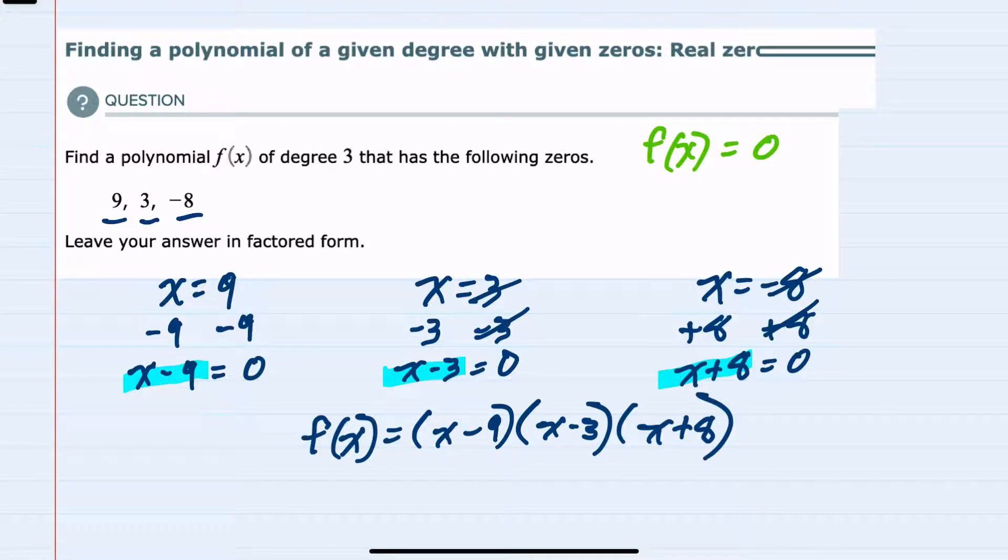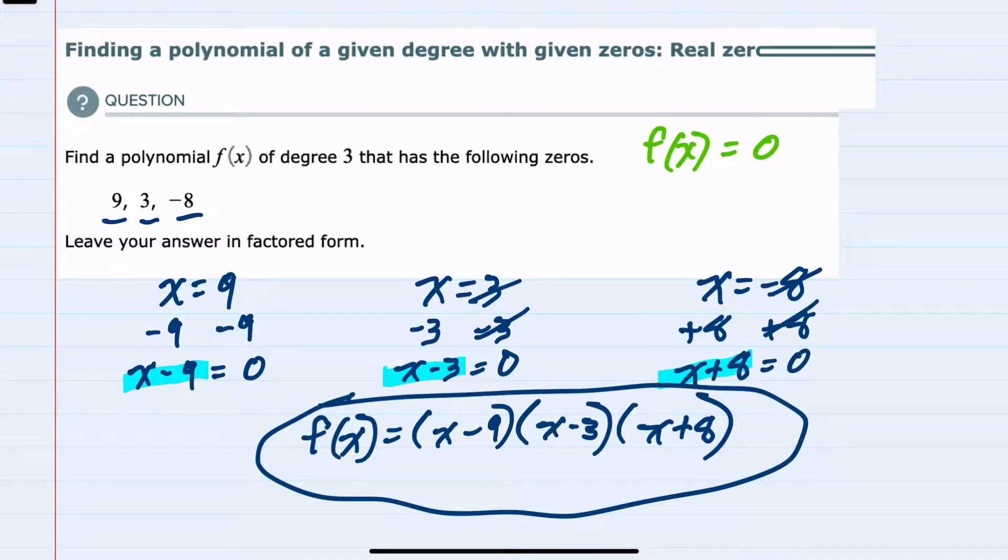And I'm told I can leave my answer in factored form so I can leave it here and I can see that in this form if I were looking for zeros instead of being given them I could set each one of these factors equal to 0 and that would give me each of these three zeros that we had started out with. So this is our factored polynomial.